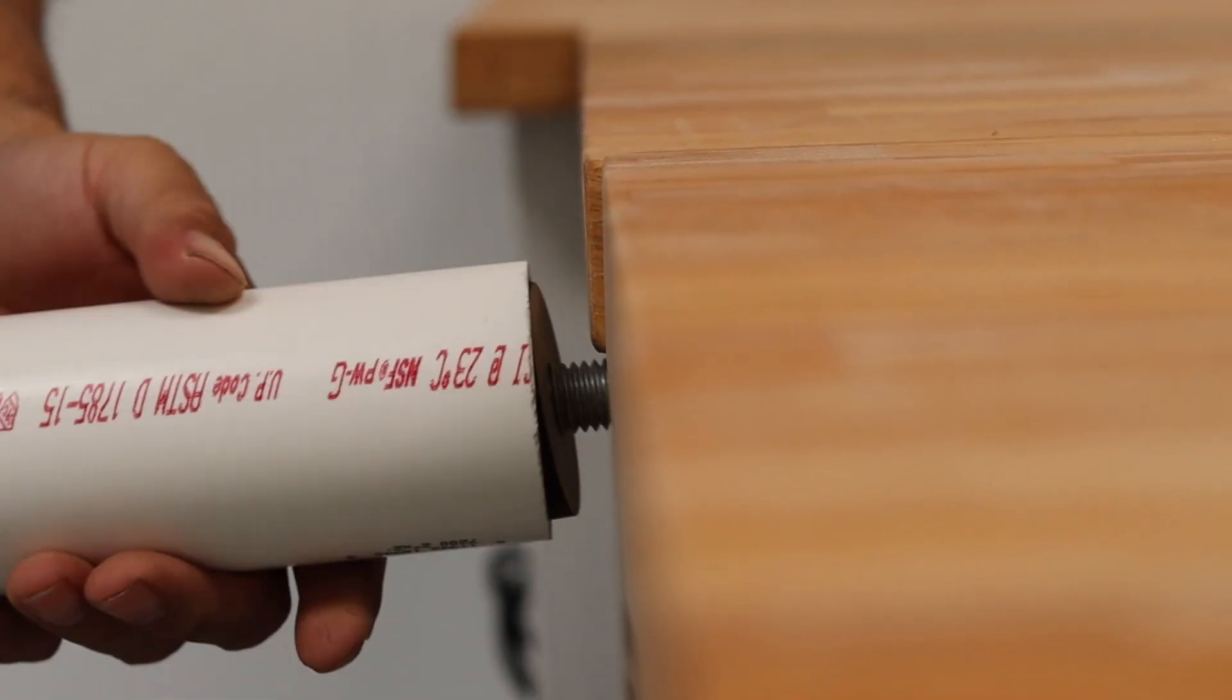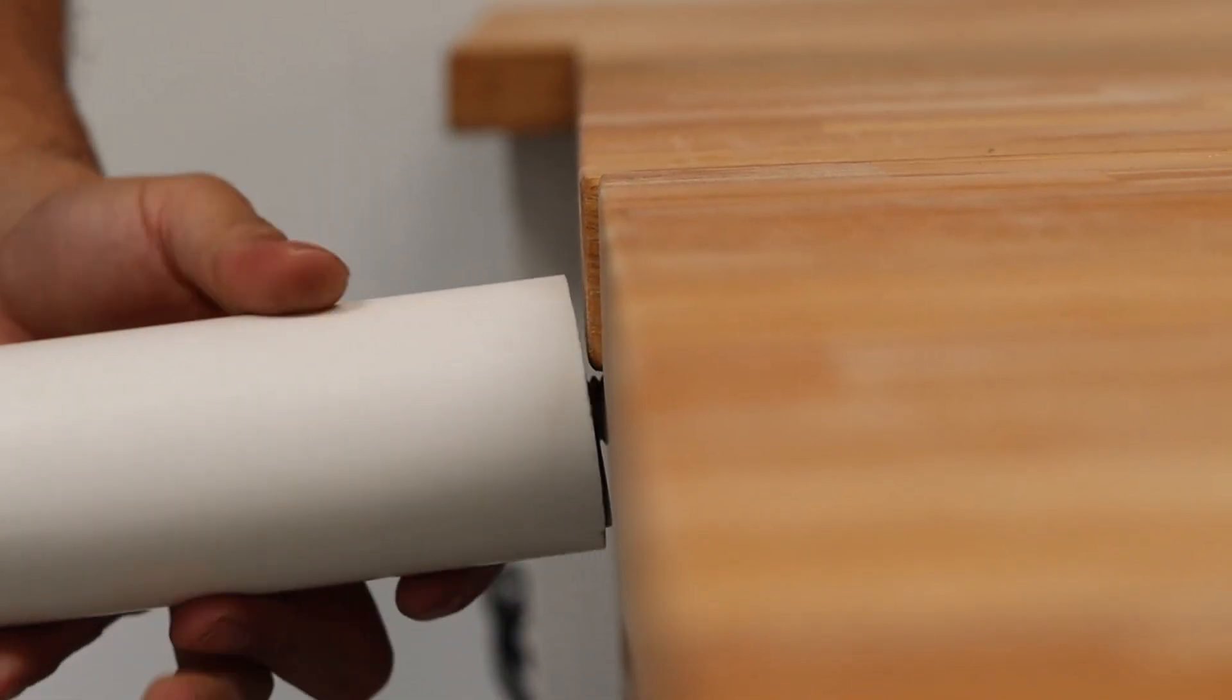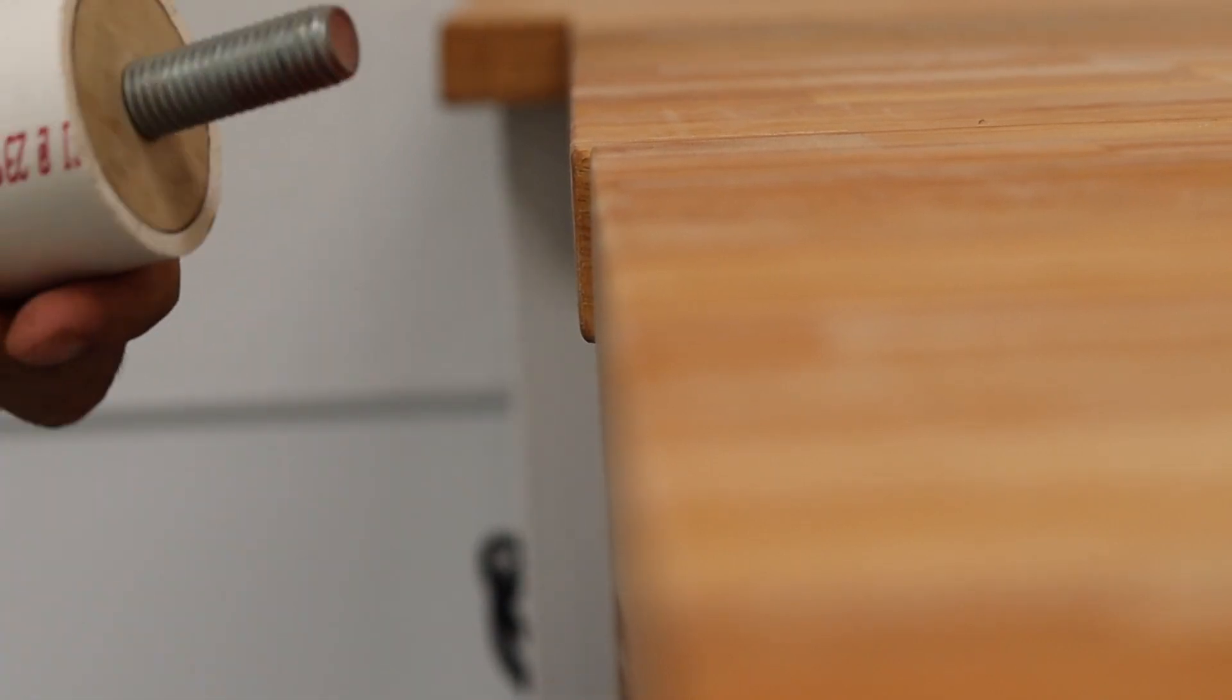The wooden donut should be flushed to the edge of the PVC pipe. Tap against the edge of the table to line things up.